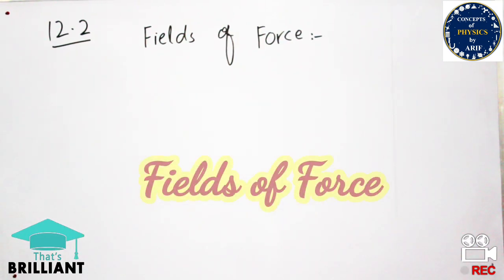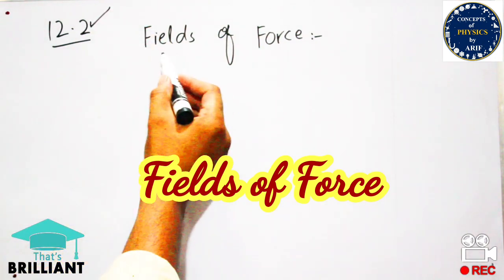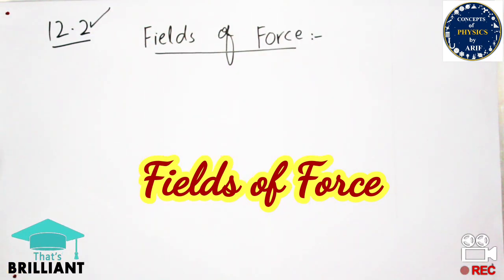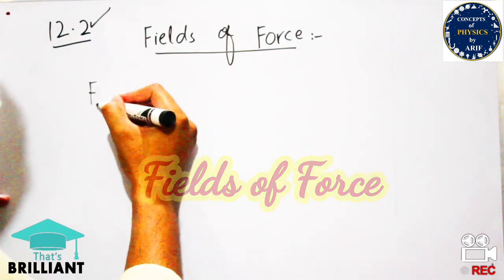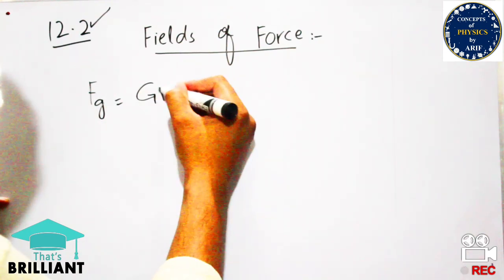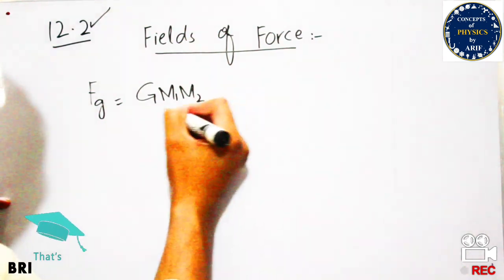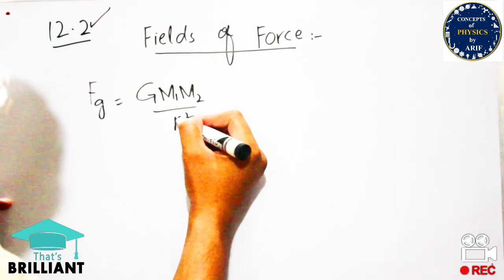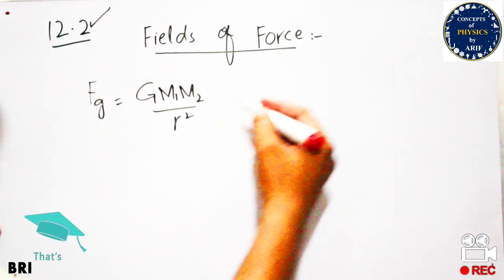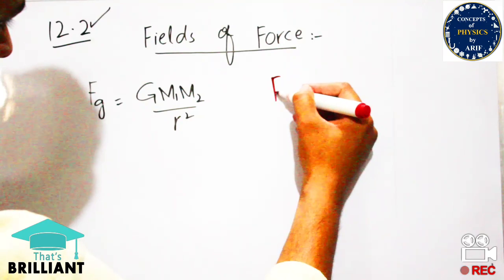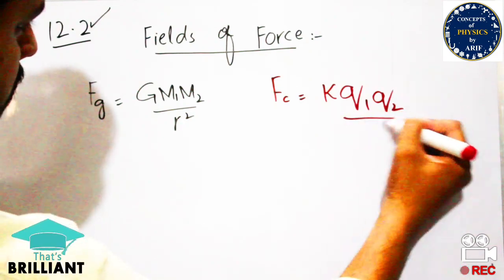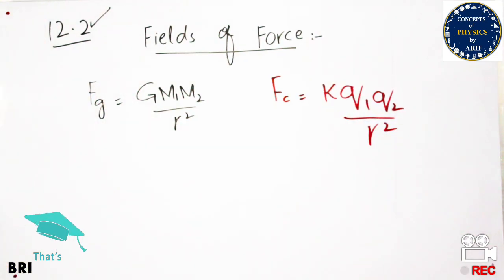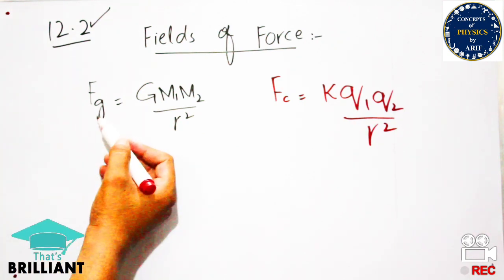Hi guys, welcome to my YouTube channel. In this video I will briefly discuss the second topic of this chapter, which is field of force. We will discuss two forces: gravitational force, where Fg is equal to Gm1m2 over r squared, and Coulomb force, where Fc is equal to k times q1 q2 over r squared.